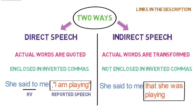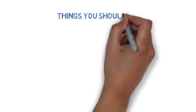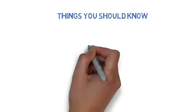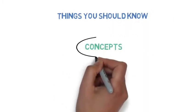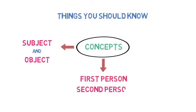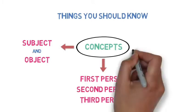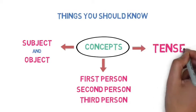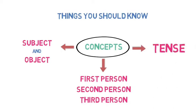We will now look at how we can convert direct speech into indirect speech. But before we begin to understand the conversion, there are certain things you should know. There are three important concepts you must understand properly: first, what is subject and object in the sentence; second, what is first person, second person, and third person; and third, what is tense. We have already discussed all of them in our previous video but we will quickly revise here.